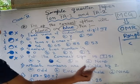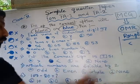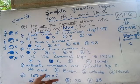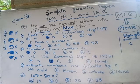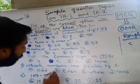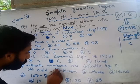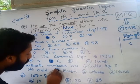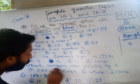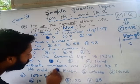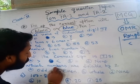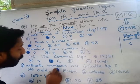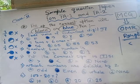Which numbers are divisible by two? Obviously, even numbers are completely divisible by two. So the answer is option B — fill up the circle very carefully and attentively.